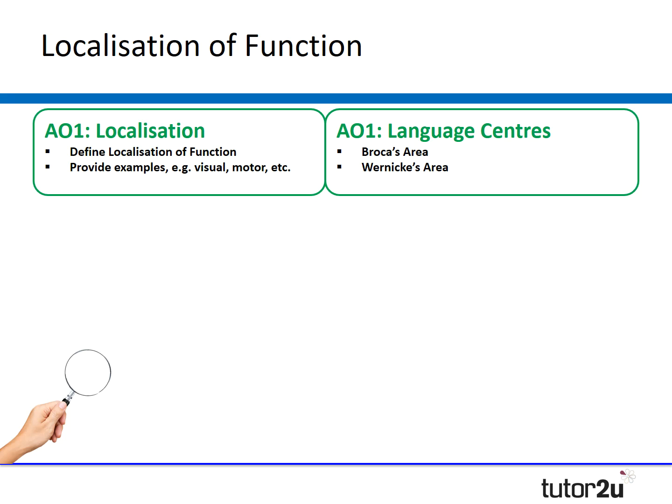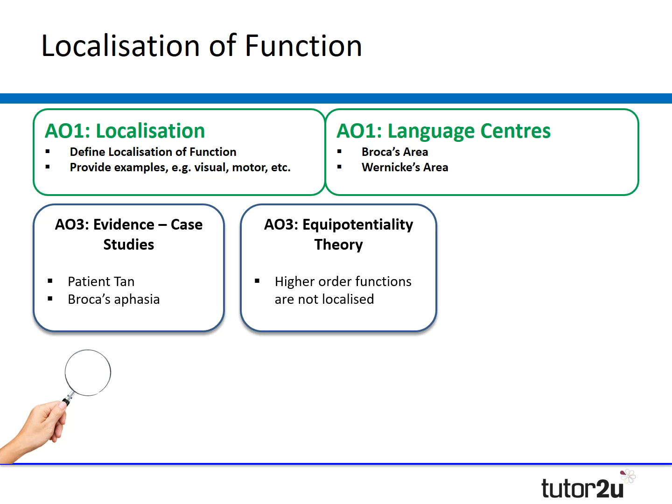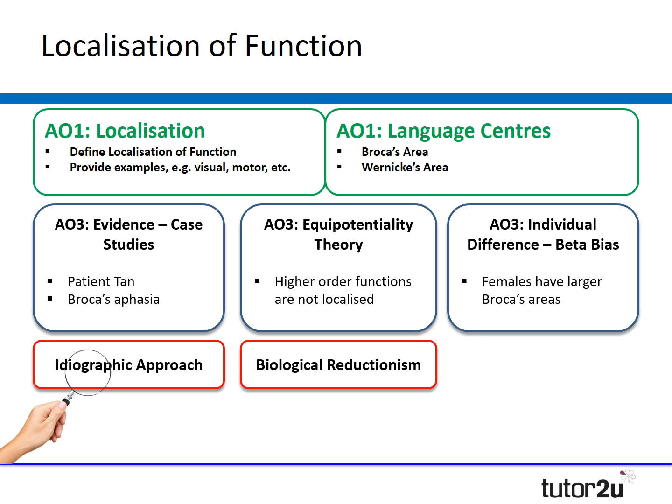We need around three evaluation points, and the focus of this webinar is on extending evaluation. First, there's plenty of evidence from case studies supporting localisation, including patient Tan. Second, there's the equipotentiality theory, which suggests higher order functions aren't actually localised — only lower order functions are. Third, we could look at individual differences, as females are said to have a larger Broca's area. We can apply an issue and debate to each: case studies represent an idiographic approach, localisation involves biological reductionism, and the individual differences point raises gender bias.